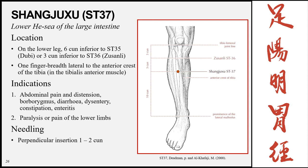Shangjuxu, Stomach 37, is the lower he-sea point of the large intestine, located on the lower leg, 6 cun inferior to ST35 (or 3 cun inferior to ST36), one finger-breadth lateral to the anterior crest of the tibia. Locate the popliteal crease and lateral malleolus, divide in half (8 cun), then go 2 cun superior. Indications: abdominal pain and distension; as the lower he-sea of the large intestine, it treats borborygmus, diarrhea, dysentery, constipation, and enteritis; and locally for paralysis or pain of the lower limbs. Insertion is perpendicular, 1 to 2 cun.